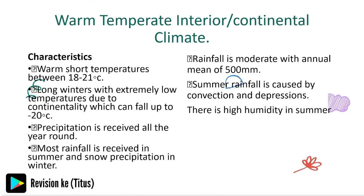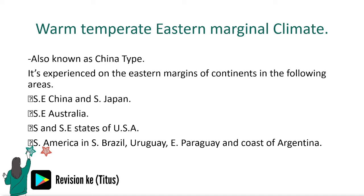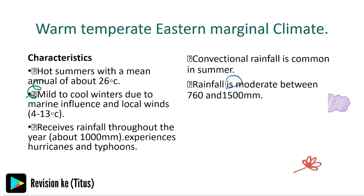The warm temperate eastern marginal climate, also known as the China type, is experienced on the eastern margins of continents: eastern and southern China, southern Japan, southeast Australia, and southern Brazil in South America.